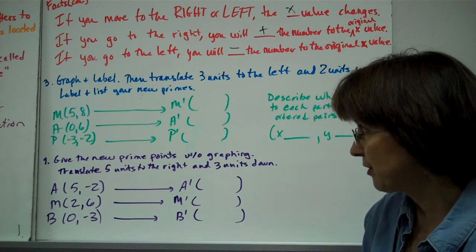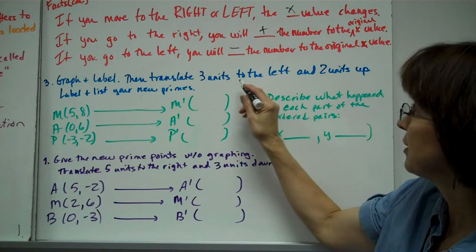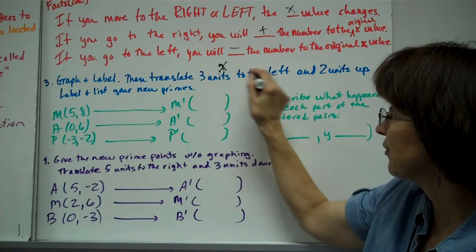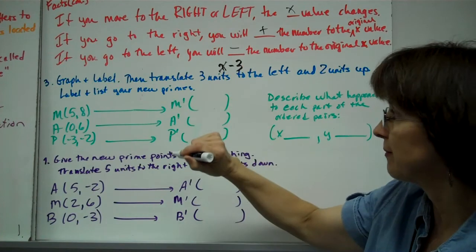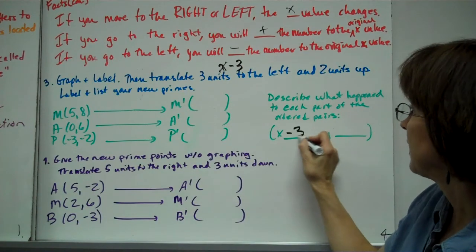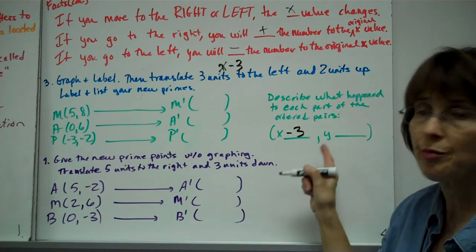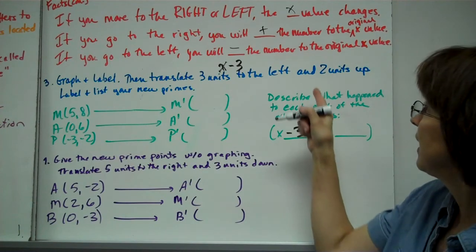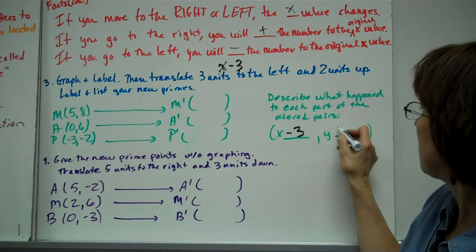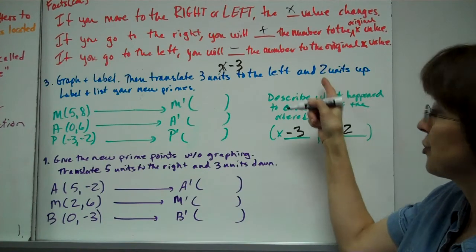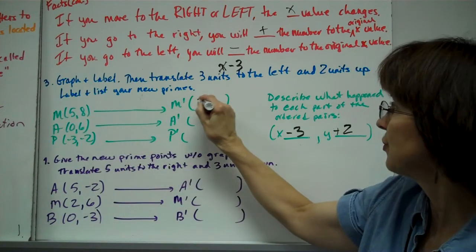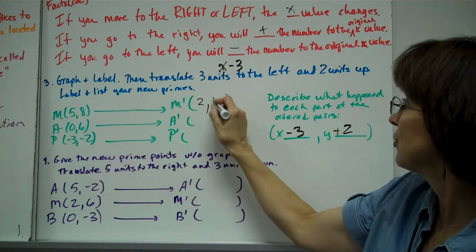So if M is (5,8), I'm moving it to the left, which would be your x value. So if it's to the left, it's going to be x minus 3. For each x, I had to take away 3 because I'm going 3 units to the left. And for the going up or down, that's my y. I'm going up, so I'm going to add 2 because I'm going up 2 units. So we're going to do 5-3=2, and 8+2=10.